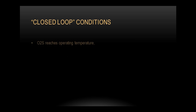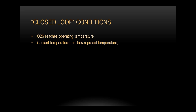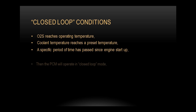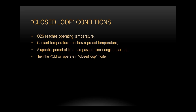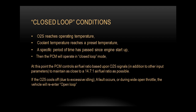Closed loop conditions: the oxygen sensor reaches operating temperature, coolant temperature reaches a preset temperature, and a specific period of time has passed since the engine was started. Then the PCM will operate in closed loop mode. At this point, the PCM controls air-fuel ratio based upon the oxygen sensor signals, in addition to other input parameters, to maintain as close to a 14.7:1 air-fuel ratio as possible. If the O2 sensor cools off due to excessive idling, a fault occurs, or during wide open throttle, the vehicle will re-enter open loop.